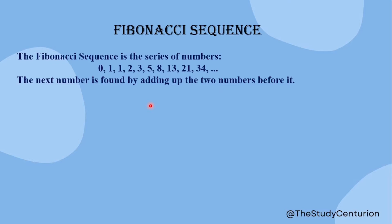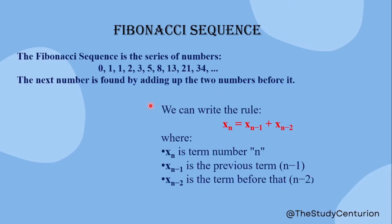If you want to get xn in the equation, the term for xn is defined as xn-1 plus xn-2. The number at position n is the sum of the numbers at positions n-1 and n-2. This is the basic idea of the Fibonacci sequence.